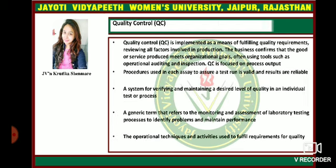What basically is quality control? Quality control is implemented by means of fulfilling quality requirements and reviewing all factors involved in production. The business confirms that the goods or services produced meet organizational goals, often using tools such as operational auditing and inspection. QC is focused on process output — procedures used in each assay to assure a test run is valid and results are reliable. It is a system for verifying and maintaining a desired level of quality in an individual test or process, and a generic term referring to the monitoring and assessment of laboratory testing processes to identify problems and maintain performance.